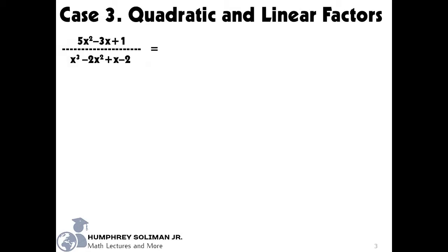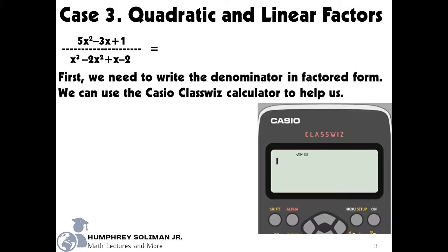Now, let's find the partial fractions for the rational expression, the quantity 5x squared, minus 3x, plus 1, over the quantity, x cubed, minus 2x squared, plus x, minus 2.